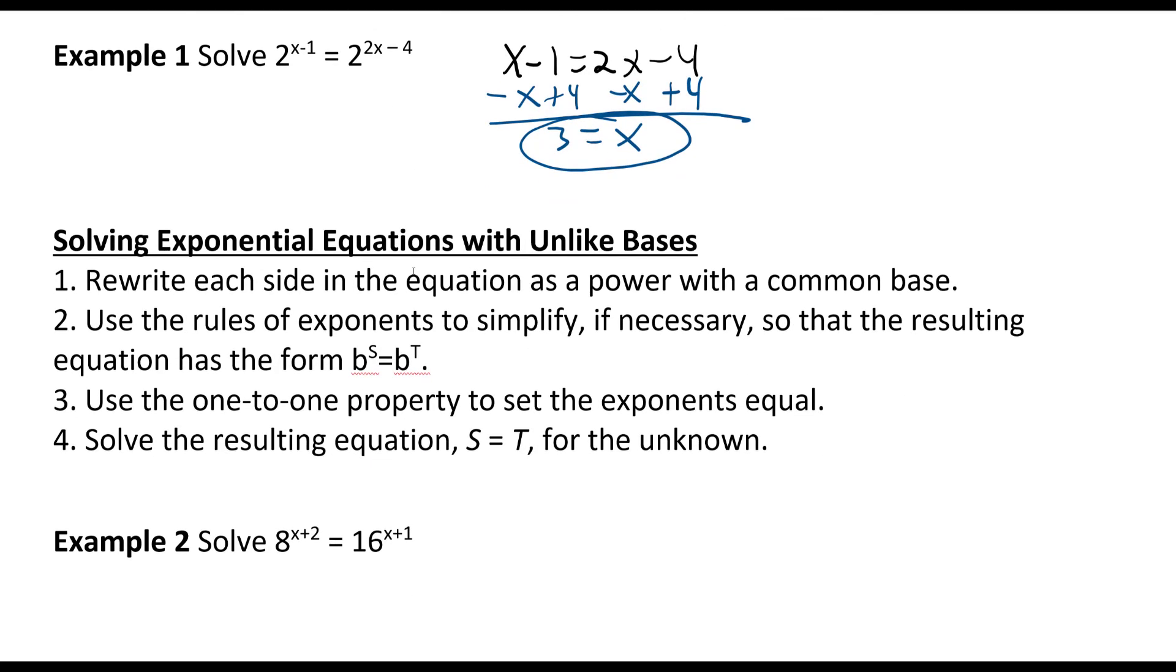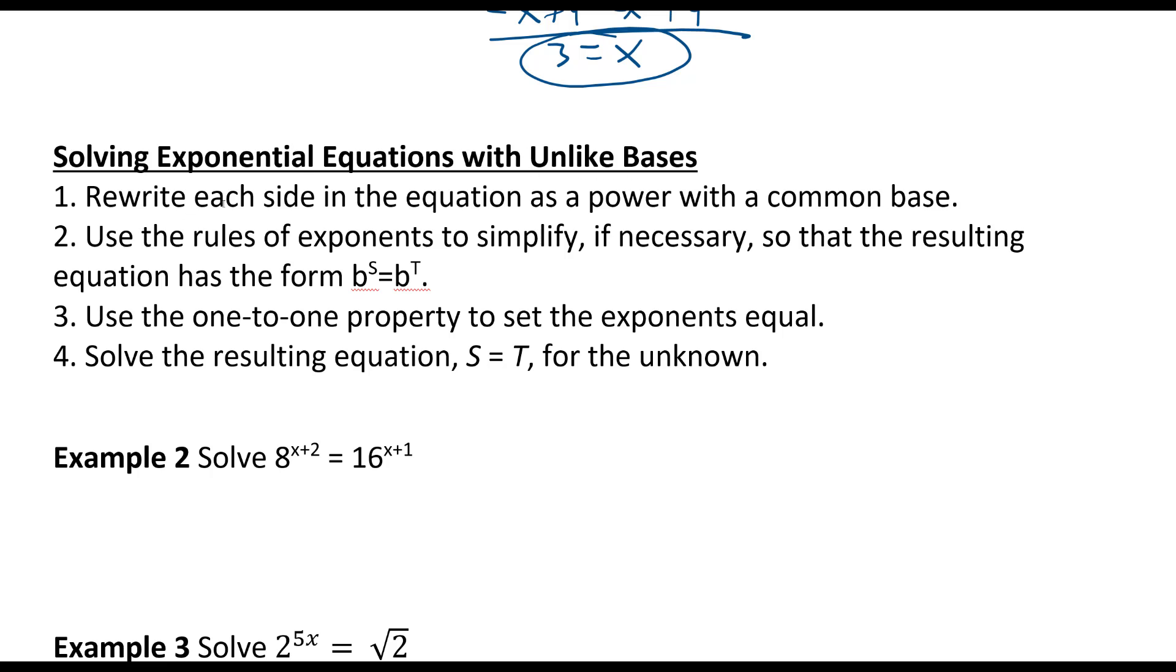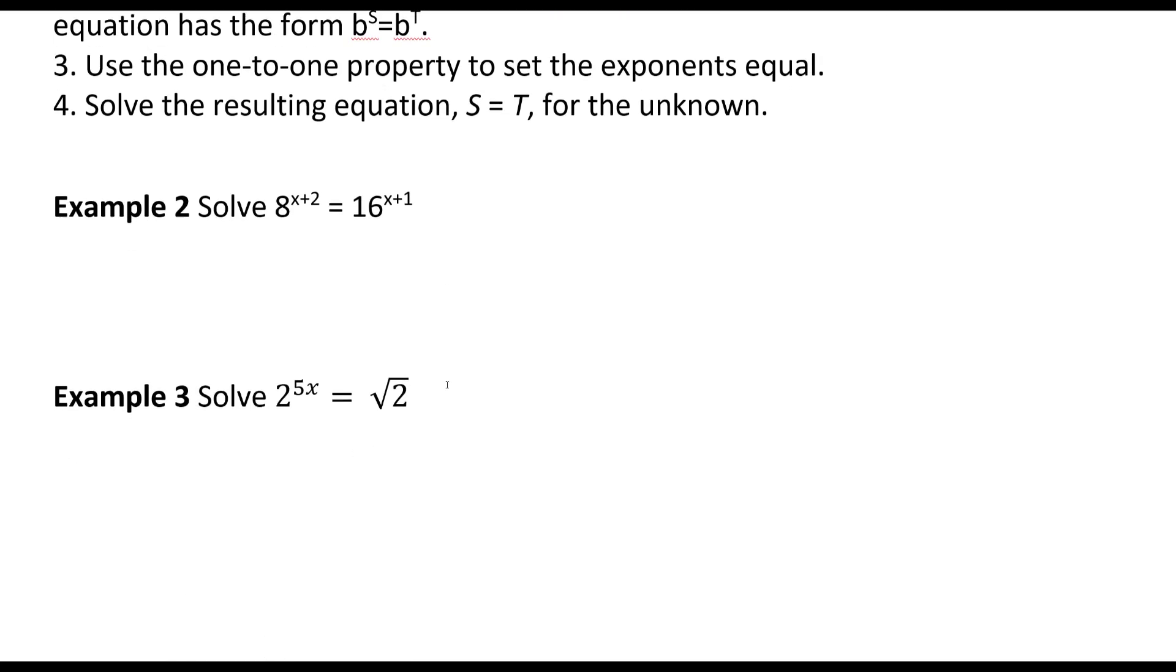The next one is solving exponential equations with unlike bases. Rewrite each side of the equation as a power with a common base. Use the rules of exponents to simplify if necessary so that the resulting equation has the form b to the s equals b to the t. Use the one-to-one property to set the exponents equal and solve the resulting equation s equals t for the unknown.